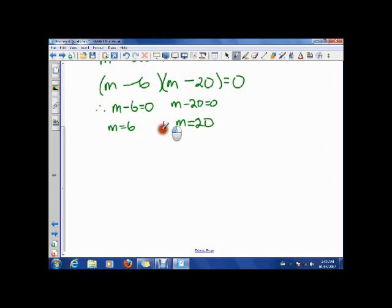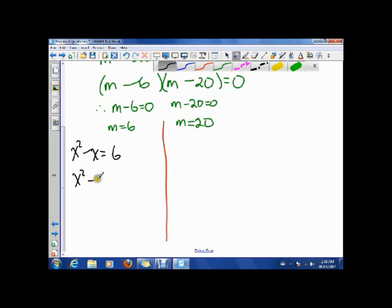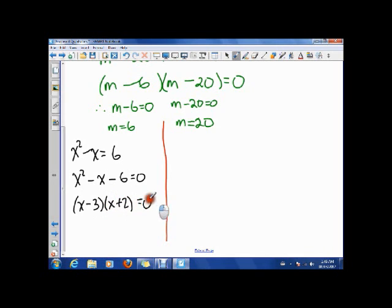So what that means is that I want, instead of m equals 6, I want to say x squared minus x is equal to 6. Well, that means that x squared minus x minus 6 is 0, means that x minus 3, x plus 2 is 0, and that means that x is 3, or x is negative 2. So I've got two solutions here.